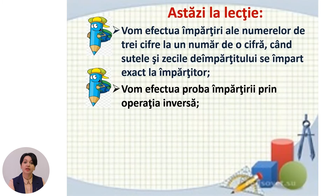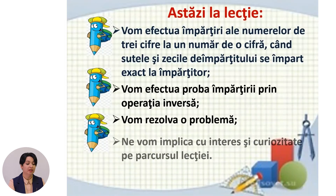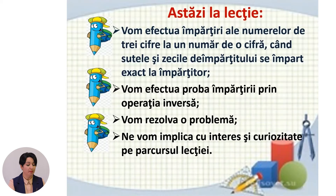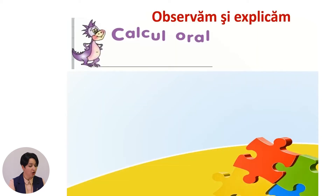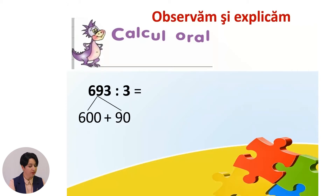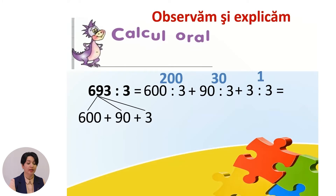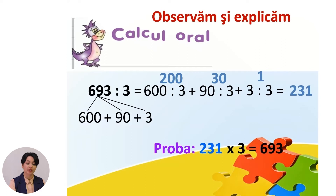Vom efectua proba împărțirii prin operația inversă și vom rezolva o problemă. Fiți atenți și observați cum realizăm oral împărțirea numărului 693 la 3. Descompunem împărțitul 693 în sute, zeci și unități: 600 + 90 + 3. Împărțim fiecare termen la 3. Suma câturilor 200 + 30 + 1 este 231. Deci 693 ÷ 3 = 231. Proba: 231 × 3 = 693.